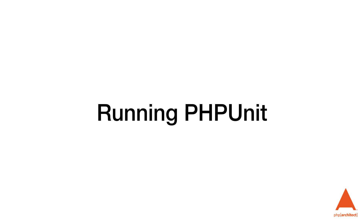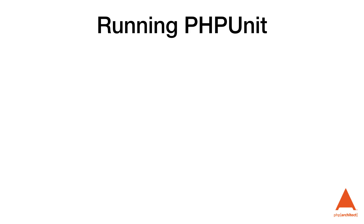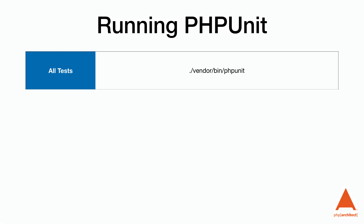PHPUnit is a command line tool, and as a command line tool there are lots of parameters that make it super powerful. This allows us to run just some of our tests depending on how we call PHPUnit. By default we can run PHPUnit without any parameters and it will run all of our tests — this is generally how we run it before we deploy our changes to production. As our test suite grows, our tests are going to take longer and longer to run.